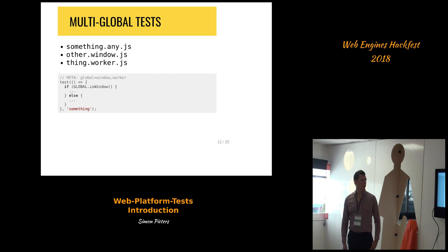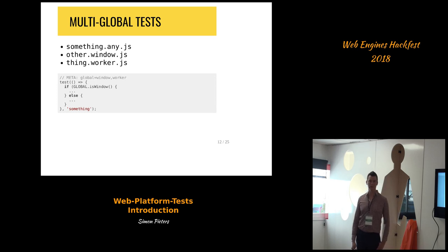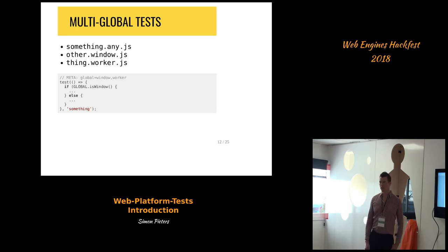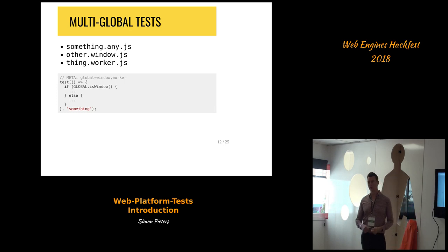There's also a feature for testing multiple globals. If you want tests in window and in a worker, you can have a single JavaScript file and the server will provide the boilerplate HTML for both cases. This is called .any.js. You can specify which globals you want to test — if you say window, comma, worker, you will test in window, dedicated worker, shared worker, and service worker.